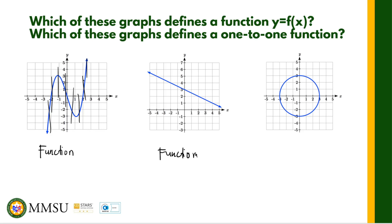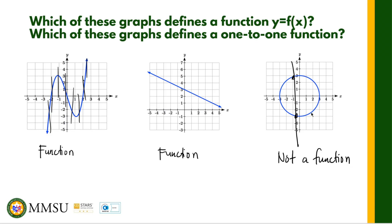The third graph is not a function because if we pass a vertical line through it, it passes through two points, so it fails the vertical line test. Since it's not a function, we don't need to determine whether it is one-to-one or not.